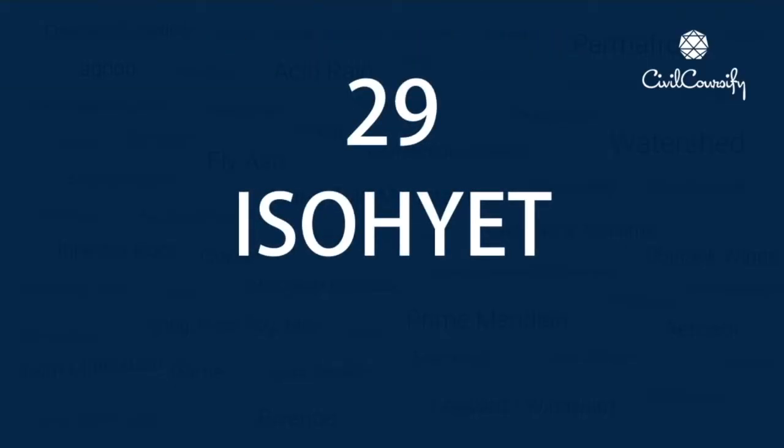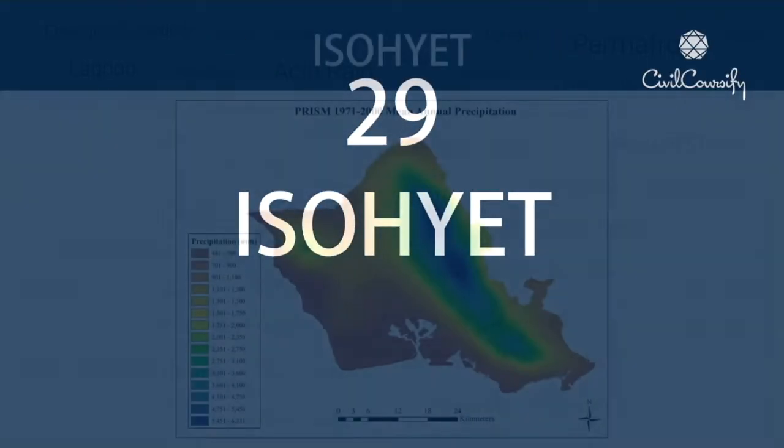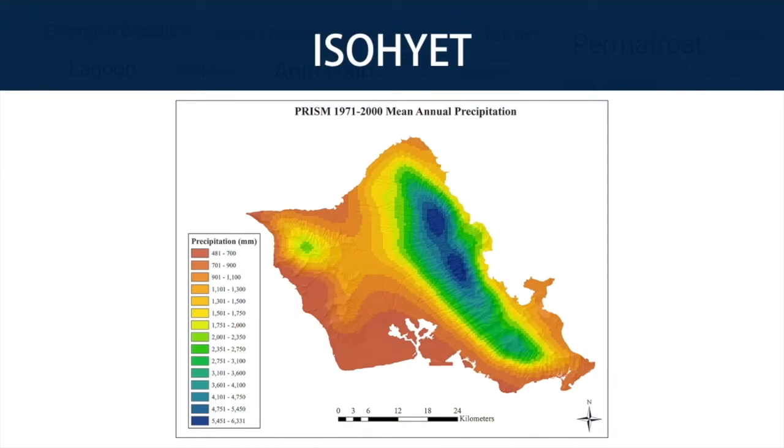Number 29: Isoheight. An isoheight is a line on a map connecting points having the same amount of rainfall in a given period.